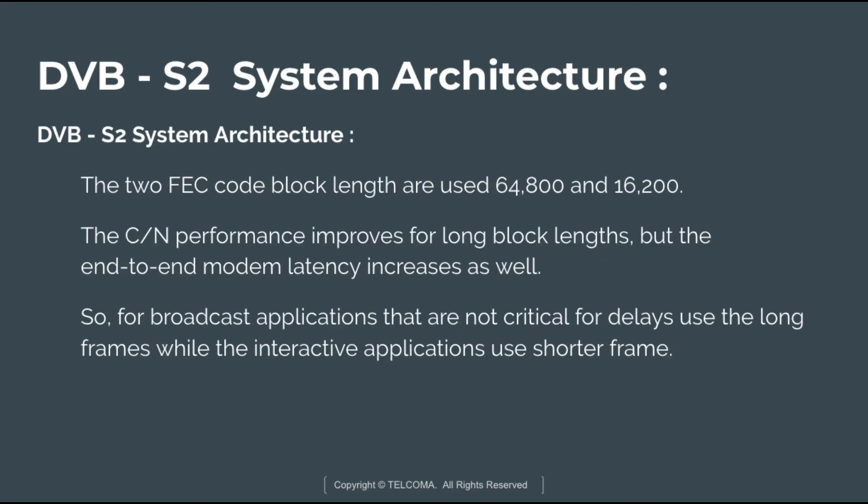There are two FEC code block lengths: 64,800 bits and 16,200 bits. The C/N performance improves for long block length, but end-to-end modem latency increases as well. When the block length is 64,800 bits, C/N performance improves but the delay between end-to-end connected modems increases. Therefore, broadcast applications that are not delay-critical use the long frame, while interactive applications use the shorter frame length.